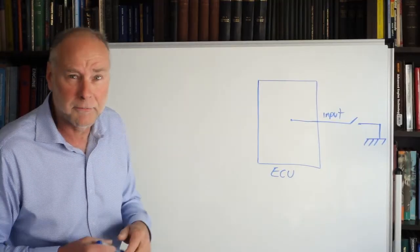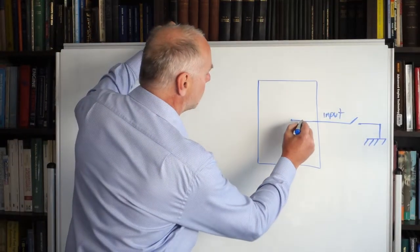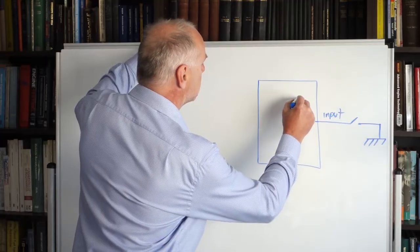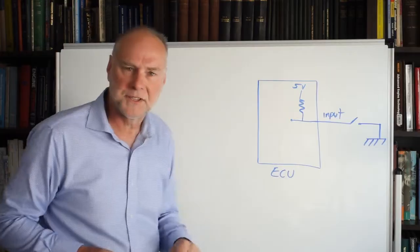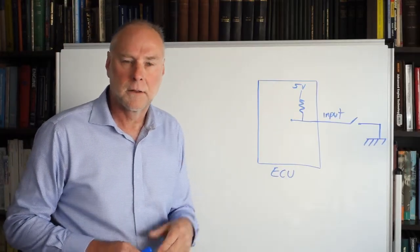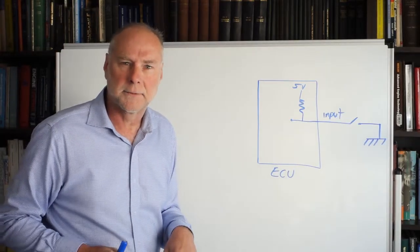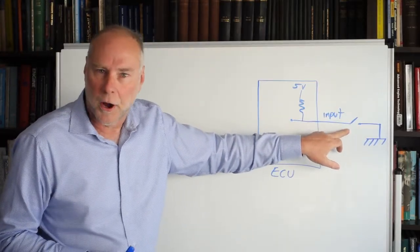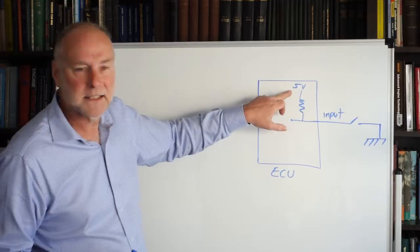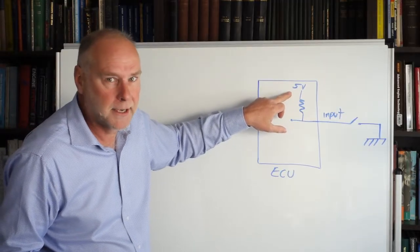So what we do is we add, in this case, a pull-up resistor, let me draw that in. Now the other side of that pull-up resistor is connected to five volts, internal five volt regulator supply. Let's look at what happens now. Now, when the switch is open, as it's shown here, the input now sees five volts. It's not floating anymore.